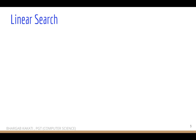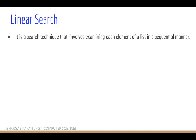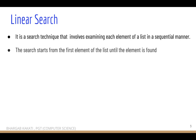There are different methods of searching an element from a given list of items. One of the methods for finding a particular element is linear search. It is a search technique that involves examining each element of a list in a sequential manner. The search starts from the first element of the list until the element is found.